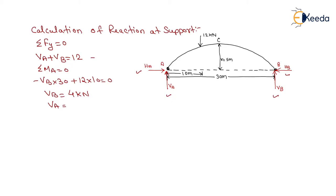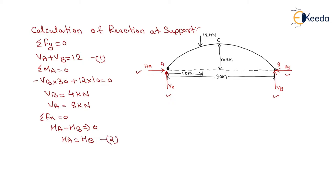Substituting VB into the first equation gives VA equals 8 kilonewtons. Using the third equilibrium condition, summation of horizontal forces equals zero: HA minus HB equals zero, so HA equals HB. In a two-hinge arch there is no hinge at the crown, so we do not have a fourth equilibrium condition and must find the horizontal reaction another way.